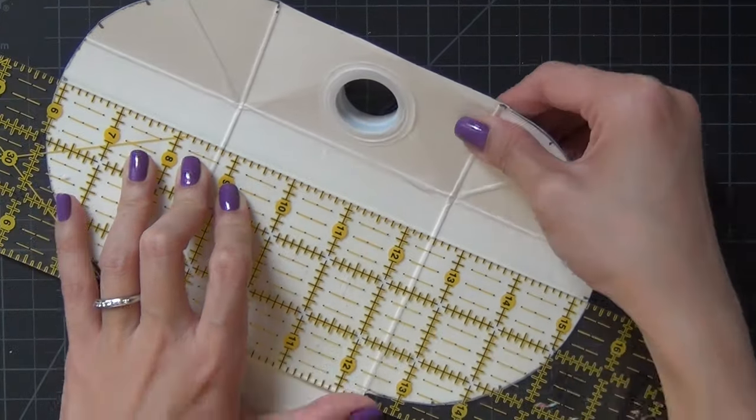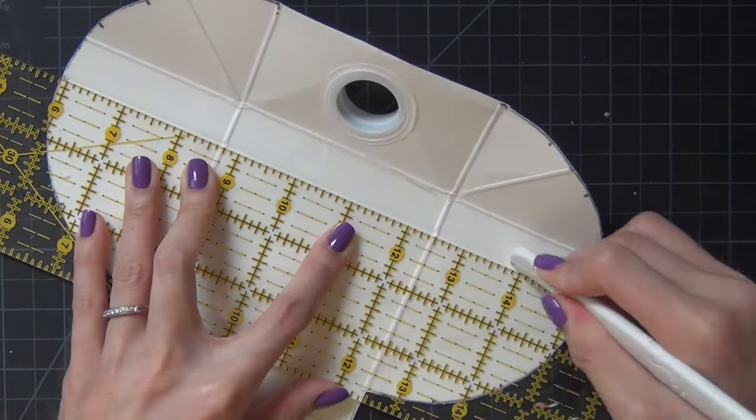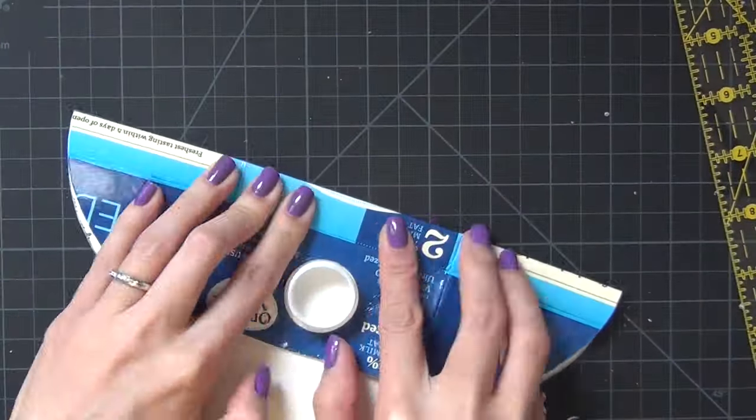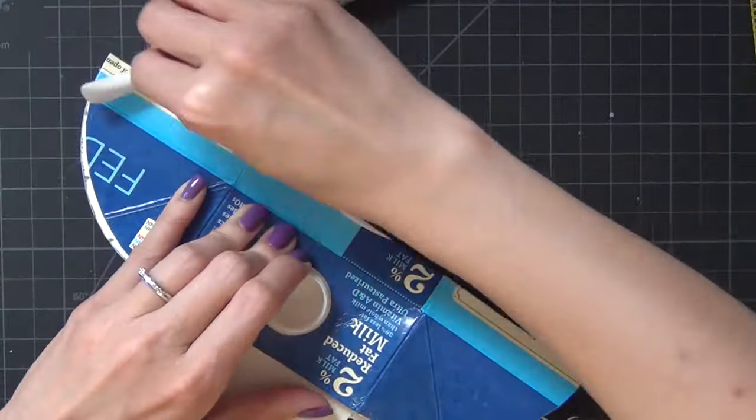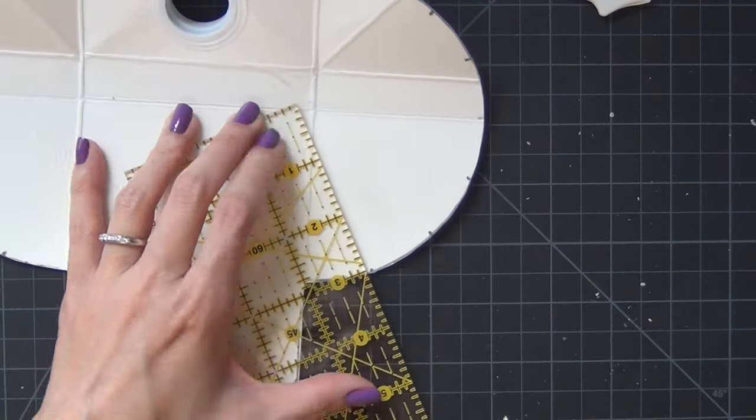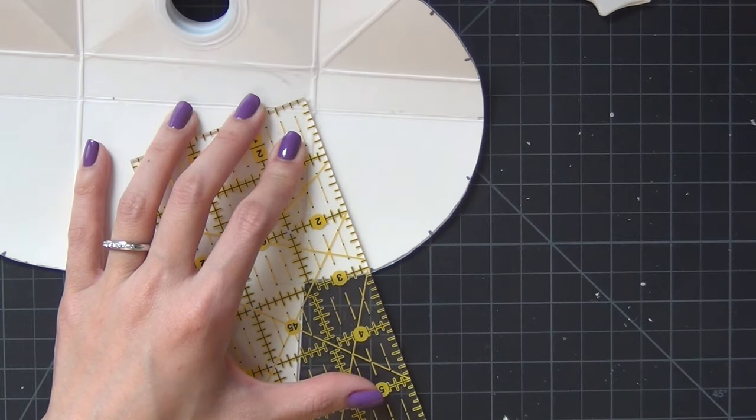Notice that for the top part of the wallet I decided to connect the longest line from the left to the right of the wallet and this is very important. It will give you a guide in order to connect the shorter lines.